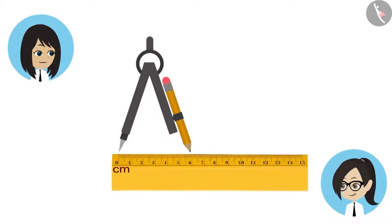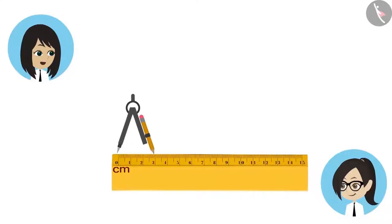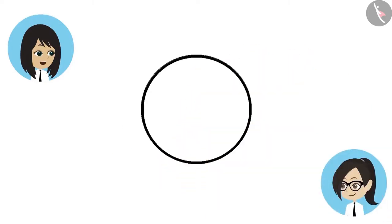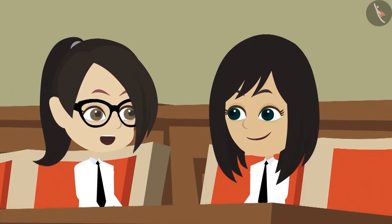Seeing this design, I too have got an idea. Let's make a circle of 6 cm radius. No, this design can only be made with measurements. Now we have to make 2 circles of 3 cm radius each — that means circles with half the measurement of the big circle. Now let's erase the top part of one of these small circles and erase the bottom of the other circle. Now the design is complete — this suddenly looks beautiful!